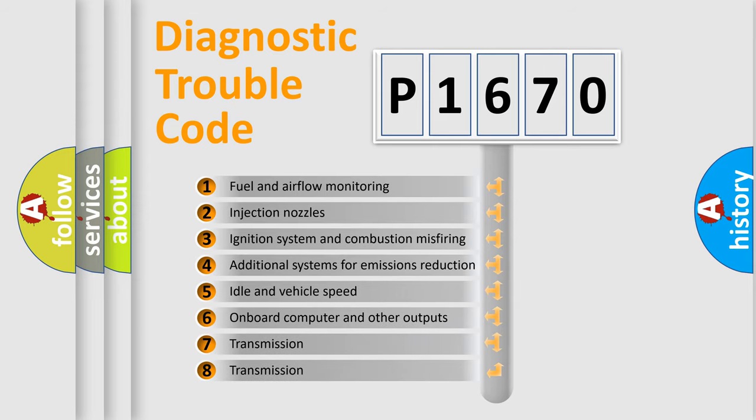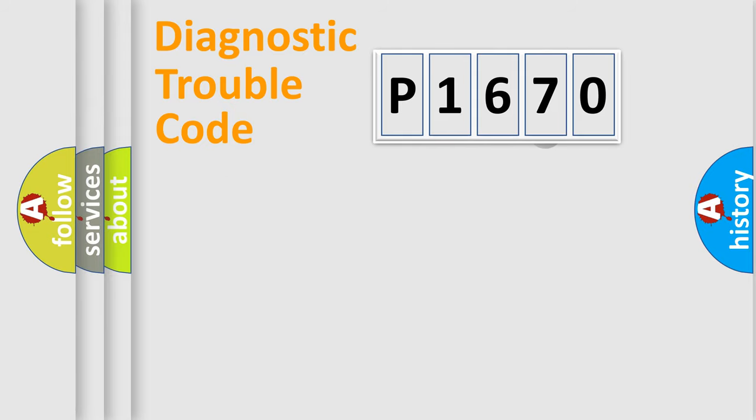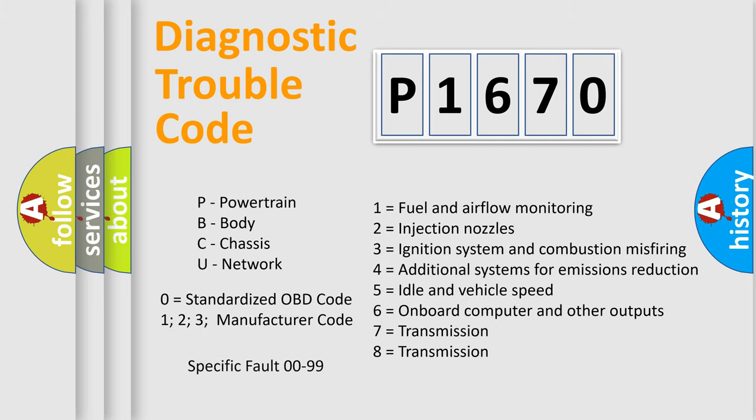The third character specifies a subset of errors. The distribution shown is valid only for the standardized DTC code. Only the last two characters define the specific fault of the group. Let's not forget that such a division is valid only if the other character code is expressed by the number zero.